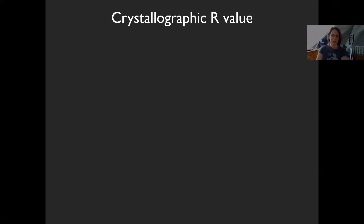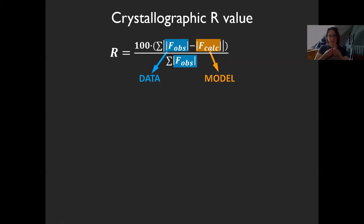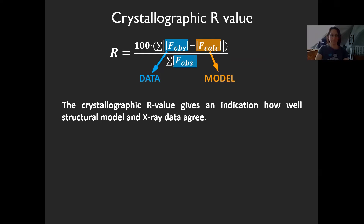To know how well our model fits the data, we have the crystallographic R value. The R value is the difference between the observed structure factor amplitudes minus the calculated ones from the model, divided by the sum of all observed ones, times 100 to get a percentage. It's essentially the difference between the observed data and the data you would expect given your model — how well your model and X-ray data agree.